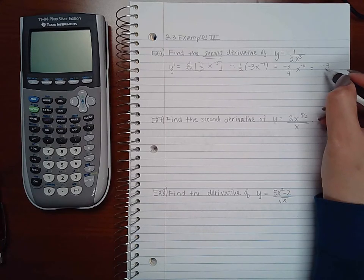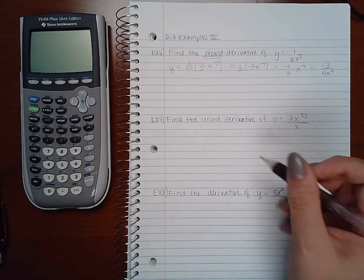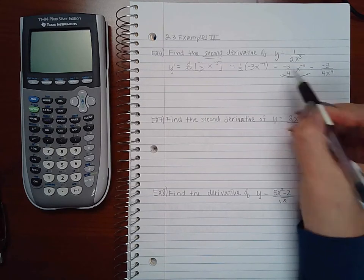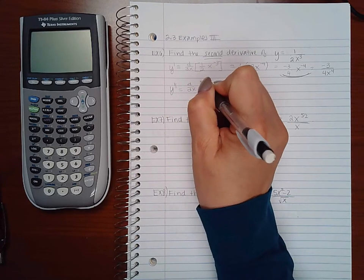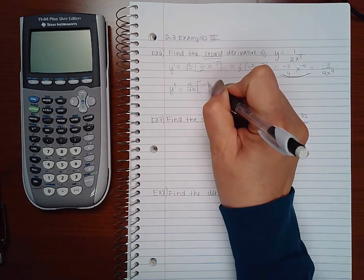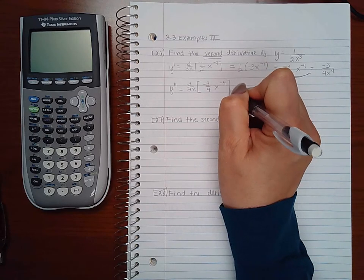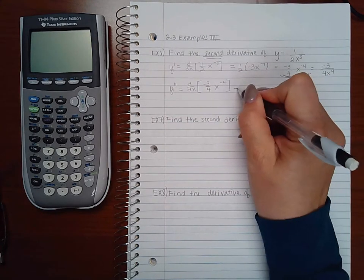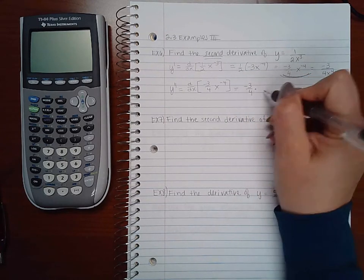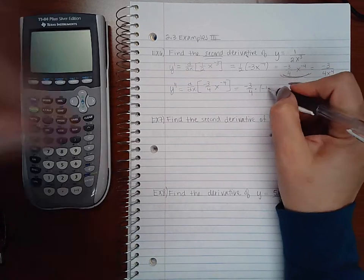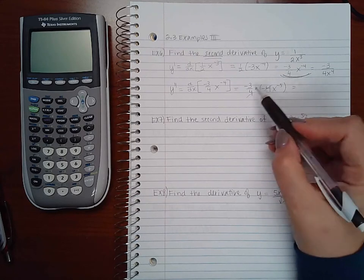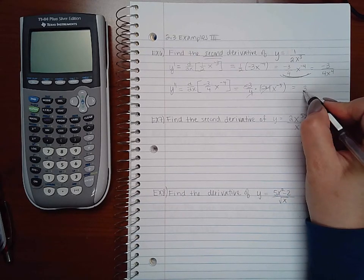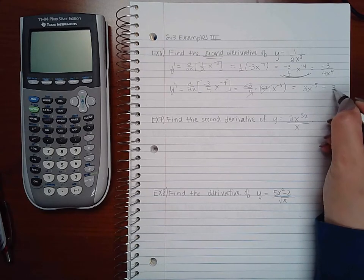Or negative 3 over 4 x to the fourth. Now I'm going to use this version to get the second derivative. So when I'm taking the second derivative, that means I'm going to take the derivative of negative 3 fourths x to the negative 4. And so then I'm going to use my constant multiplier rule and my power rule. So then this 4 and this 4 were reduced. A negative and a negative will just be a positive 3 x to the negative 5th. Or 3 over x to the 5th.